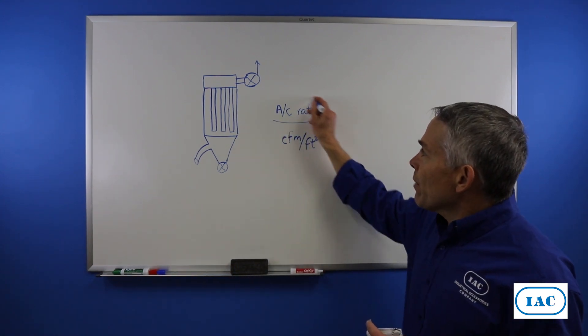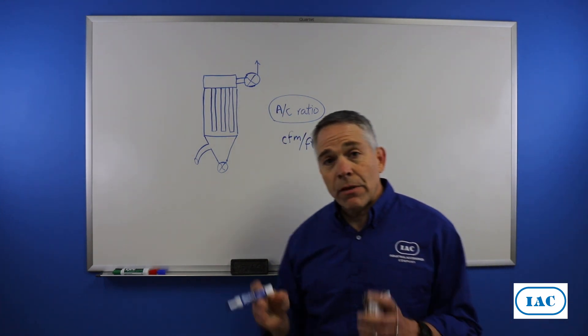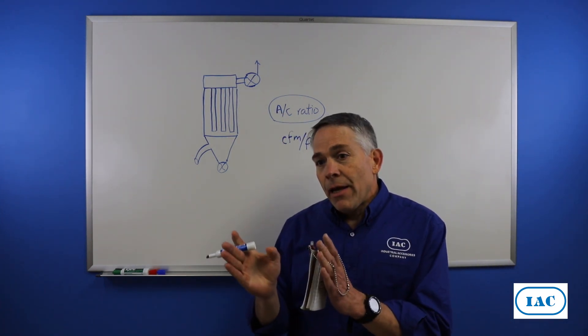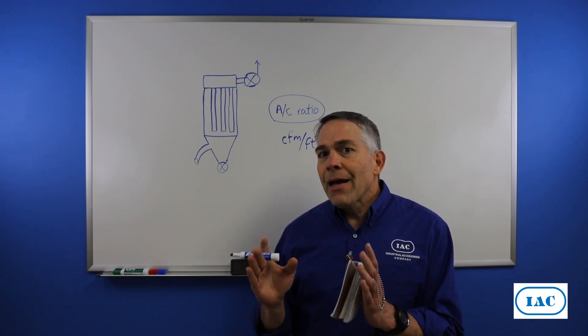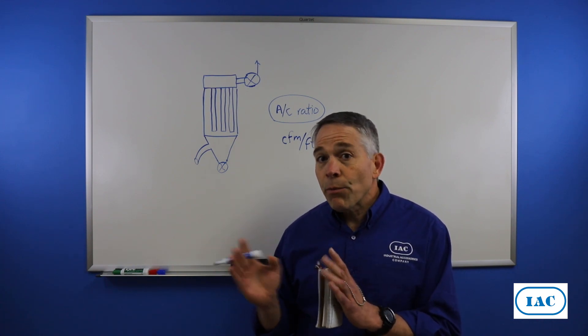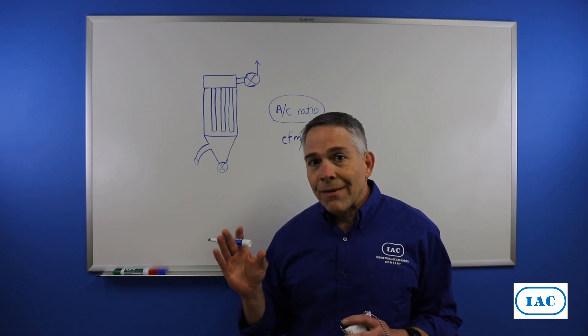Air-to-cloth ratio is the most important parameter in designing bag houses and that's usually what people look at. And yes, as a rule of thumb, the lower the better, but we need to keep an eye on the other velocity that's important in dust collector design.